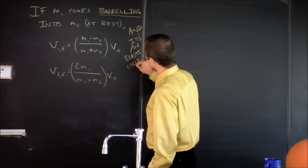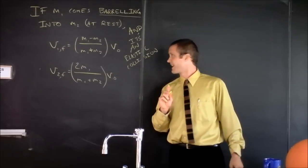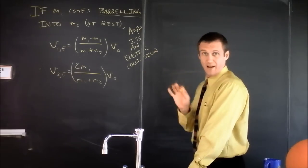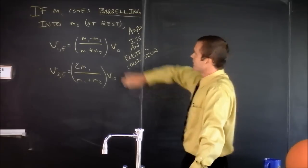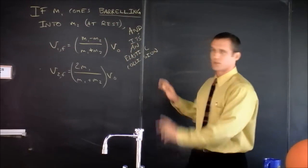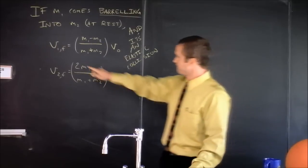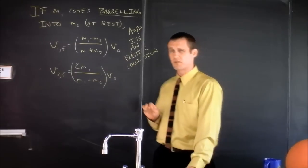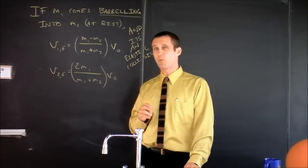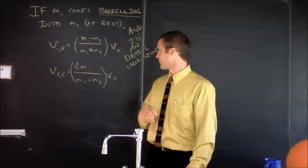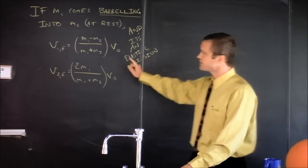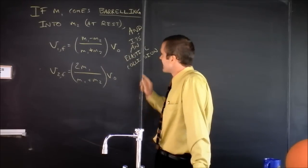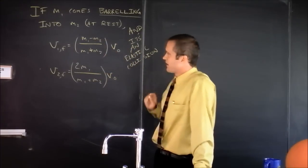The elastic collisions are the ones that conserve kinetic energy also. So energy is conserved, and of course, in every collision, momentum is conserved. But if M1 comes barreling into M2, which is just sitting there innocently, then the final velocity, the two masses, are given by these equations, which the book says result from simple algebra, and we found result from messy, complicated algebra. But I want to investigate three special cases in this set of equations.